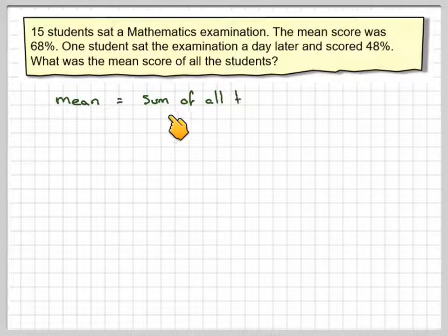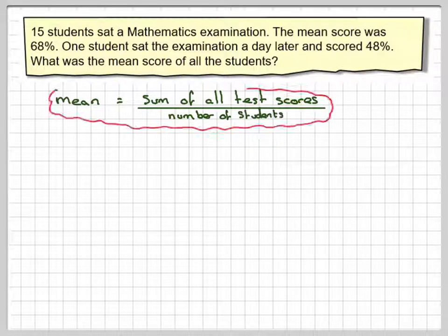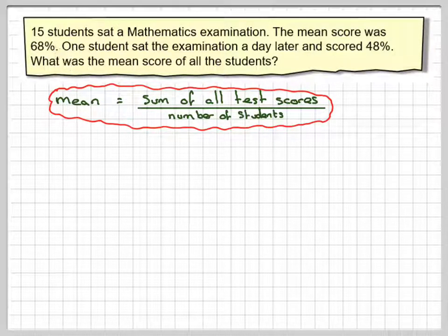So if the mean is the sum of all the test scores divided by the number of students, let's just consider when we have 15 students to begin with.